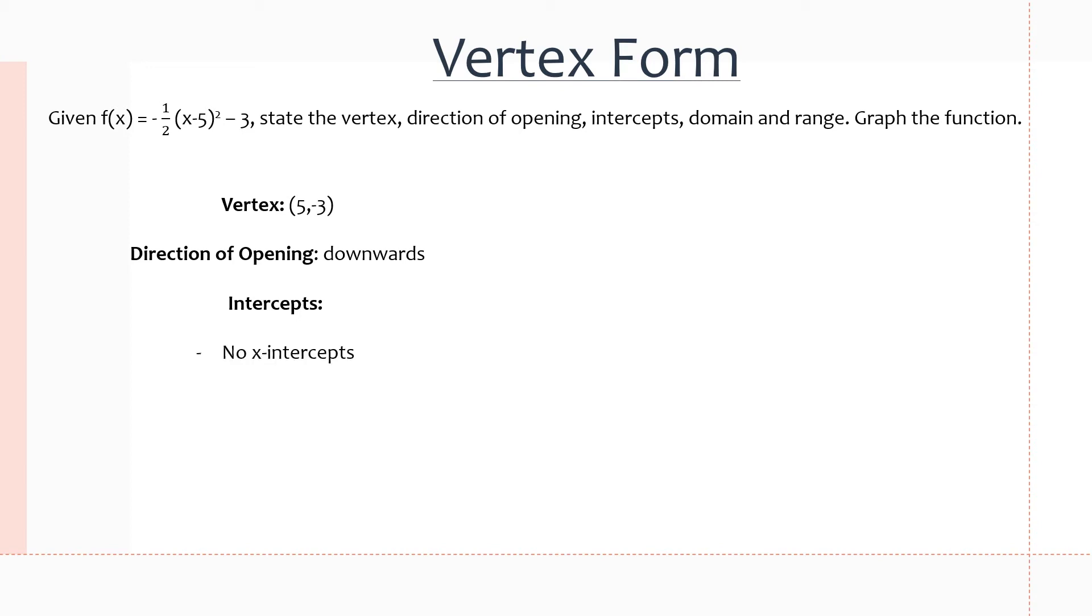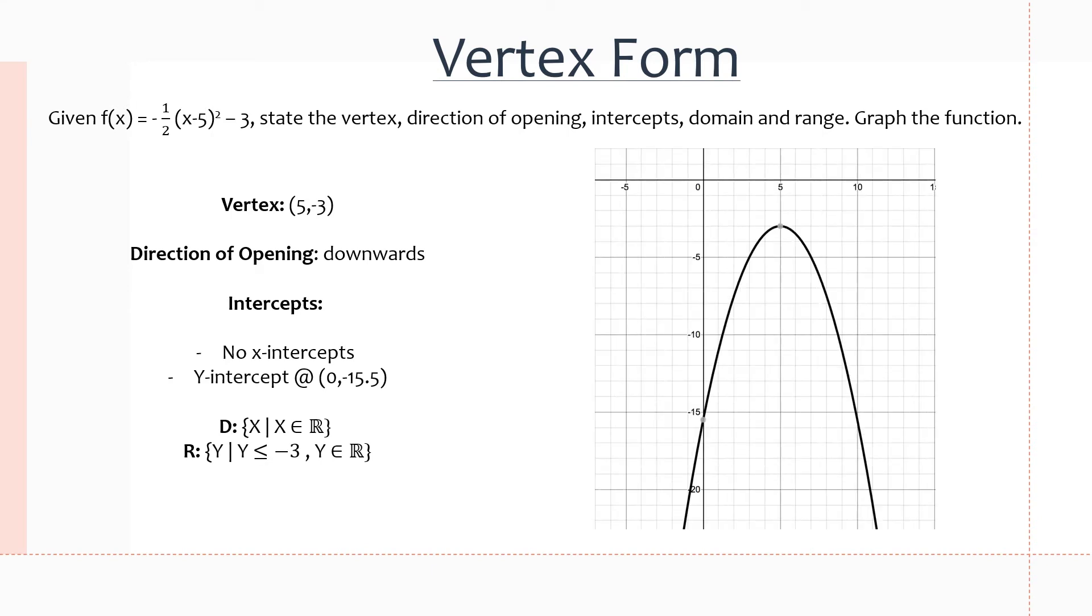So automatically, we can assume that there are no x-intercepts. But if you substitute in 0 for x, you get y equals negative 15.5. That means there is a y-intercept at (0, -15.5). The domain is x is an element of the reals because there are no restrictions on x. But because the vertex is at (5, -3), there is a restriction on the range because it opens downwards. So the range should just be y is less than or equal to negative 3. And you can see that with this graph right here. So there are no x-intercepts, the domain is not restricted, and the range does have a restriction. And there is a vertex at (5, -3). So we can get all of this information just by analyzing the properties from the equation itself.